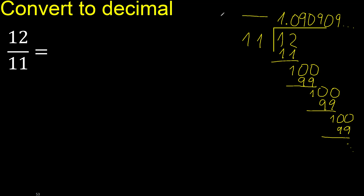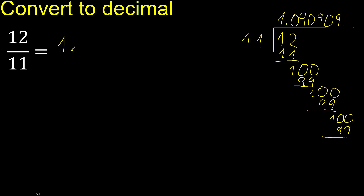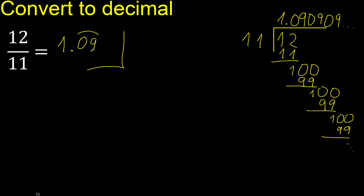The answer is 1.0909... — after the decimal point, repeat: zero nine, zero nine, zero nine. It repeats, therefore write it as a repeating decimal. Finish.